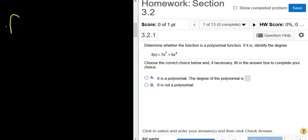In this problem, we have a function f of x equals 7x to the 7th plus 6x to the 4th. And the question wants to know if the function is a polynomial, and if it is, we have to find the degree.